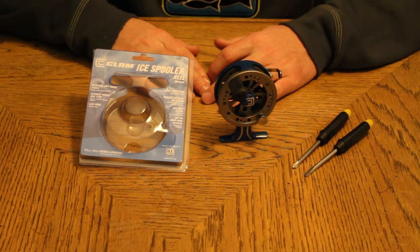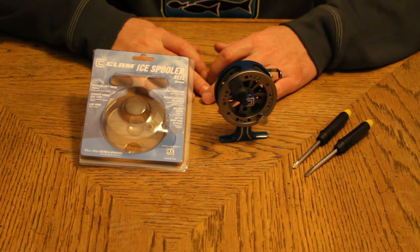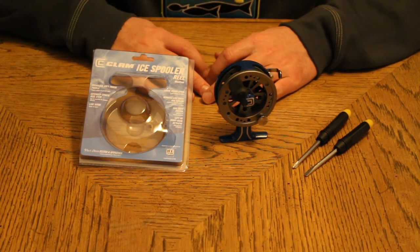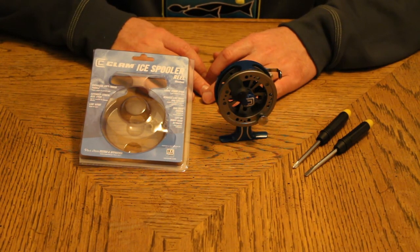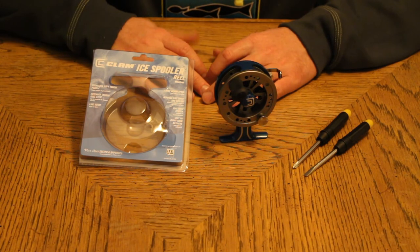So there you have it. Just a few easy steps to switch the retrieve on your ice spooler reel. If you have any questions, leave it in the comments below. And if you haven't already, please consider subscribing and we can continue to bring you guys content. Thanks a lot for watching.